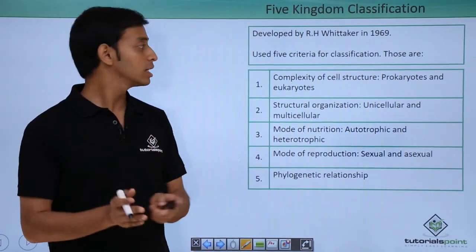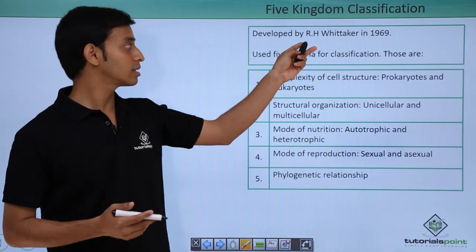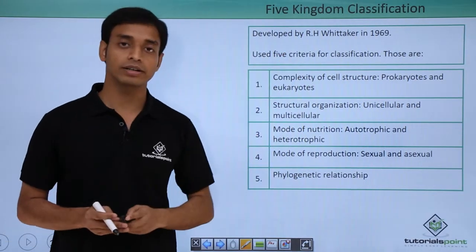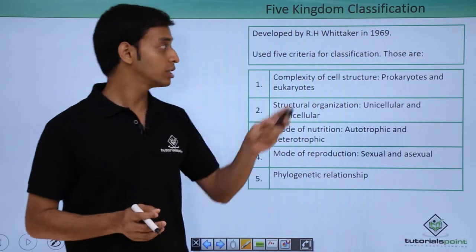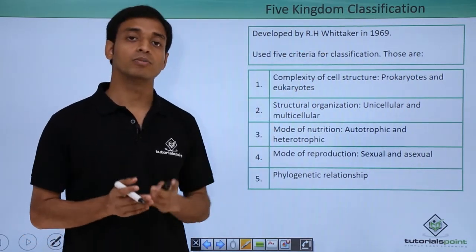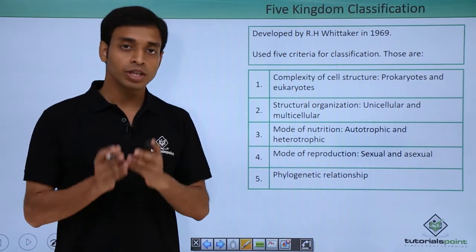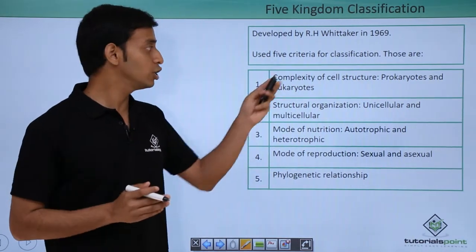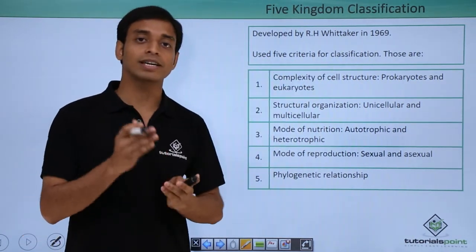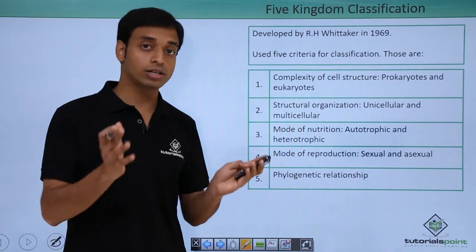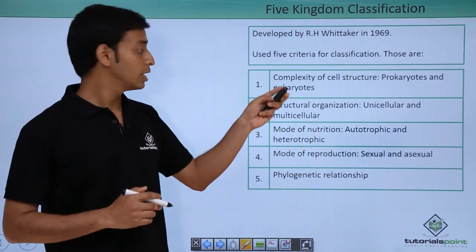This system was put forward by the famous scientist R.H. Whittaker in the year 1969 — a very important name for most competitive examinations. Whittaker used several criteria in order to classify organisms into five kingdoms.